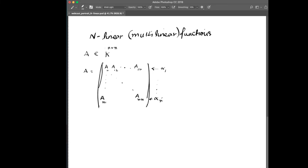Then a function D of A, which is a multilinear function of A, could also be described as a function of all of these rows: D of alpha 1, alpha 2, and so on until alpha n.